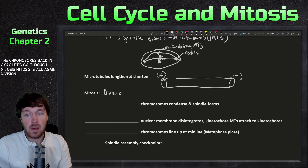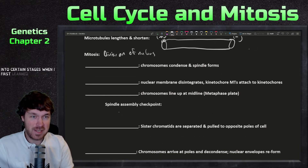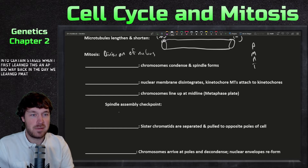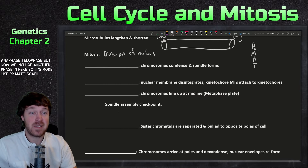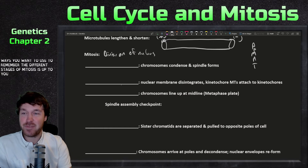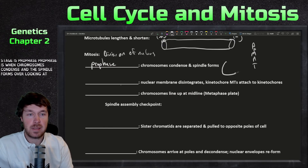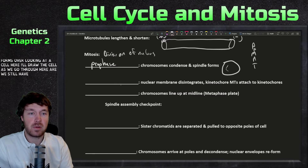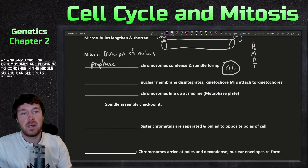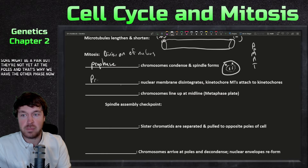Mitosis — division of the nucleus — is broken into stages. The classic mnemonic PMAT covered prophase, metaphase, anaphase, and telophase, but we now include prometaphase, making it PPMAT. The first stage, prophase, is when chromosomes condense and the spindle forms. Looking at a cell in prophase, there's still a nuclear envelope and chromosomes beginning to condense. The centrosomes may be a pair but aren't yet at the poles.